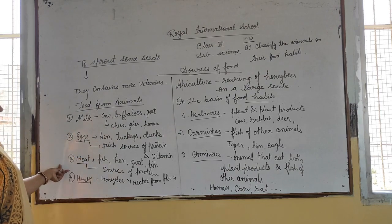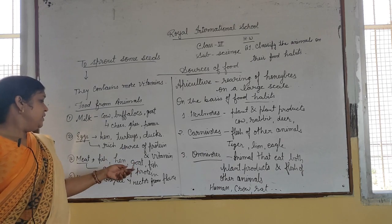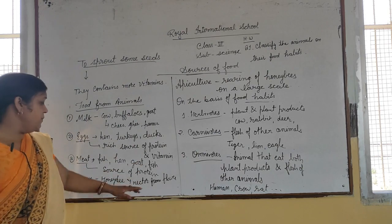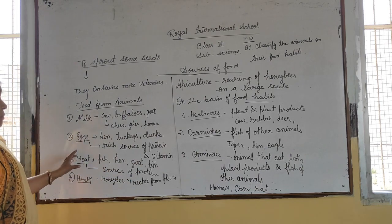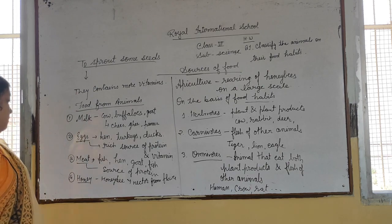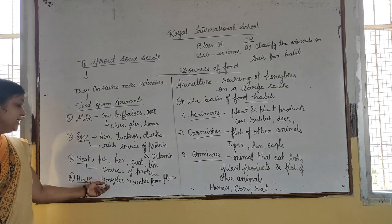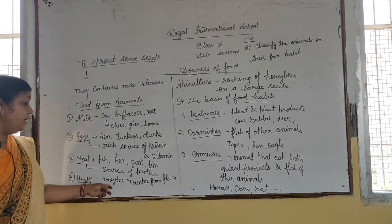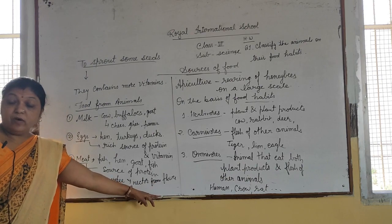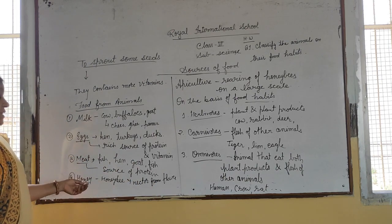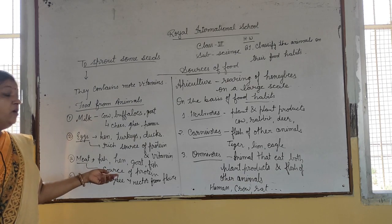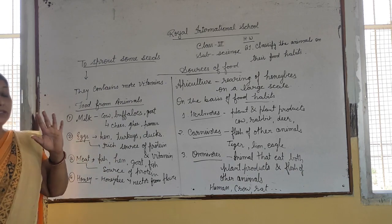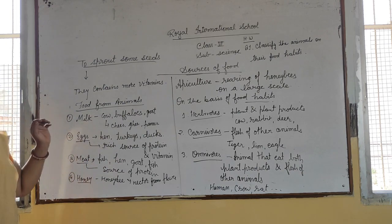Fish and goat are sources of meat. Meat is a source of protein. Honey bees collect nectar from flowers and convert it into honey. Honey is a liquid that is very delicious and has medicinal value.